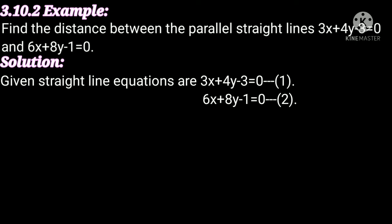In this problem, in equations 1 and 2, the coefficients of x and y are proportional but not equal. To convert them to equal coefficients, we multiply the first equation by 2, so that the x and y coefficients become equal.